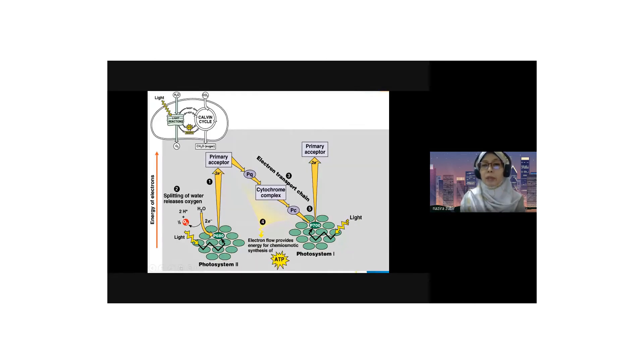The photon of light strikes the pigment molecule at photosystem I. It keeps transferring the energy from one molecule to another. At the same time, the electron is excited to a higher energy level until it reaches chlorophyll A, located at the reaction center of P700. The chlorophyll A is energized and the electron is excited and transferred to the primary electron acceptor.